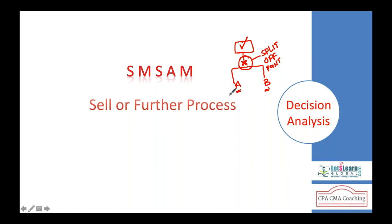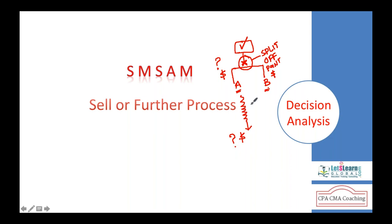Once separated, we have a selling price at the split-off point itself, or the product can be further processed and sold at a higher price. The question is: should we sell the product at this point, or further process and sell at a higher price? To answer this, we need to analyze the cost of further processing.